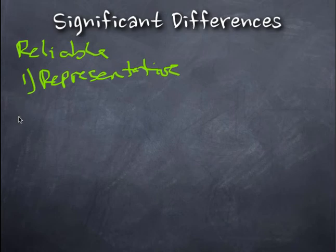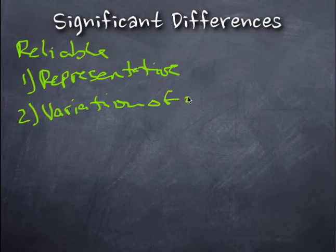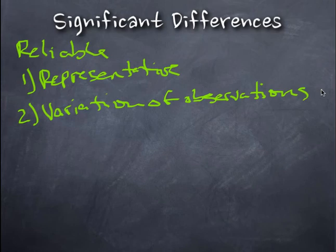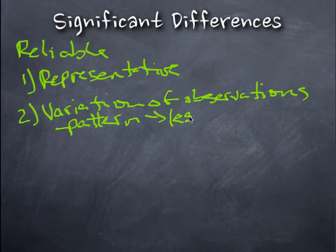The second thing is the variation of the observation. If we begin to see a pattern, in other words, they become less variable, then the conclusions we make become that much more solid. So the pattern betrays less variable, and they don't vary a lot, then we can make some more solid conclusions.